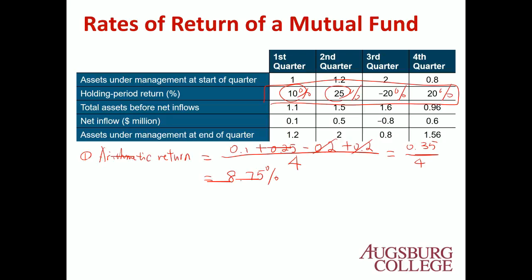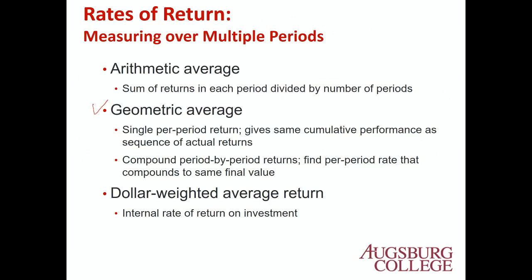The next type is the geometric average return. The key difference between arithmetic and geometric average is that for the geometric average, we assume compound interest. The problem with arithmetic return is that it does not assume compounding. The geometric average does. The formula is: the product of (1 + r_i) for i equals 1 to n, raised to the power of 1 over n, minus 1.